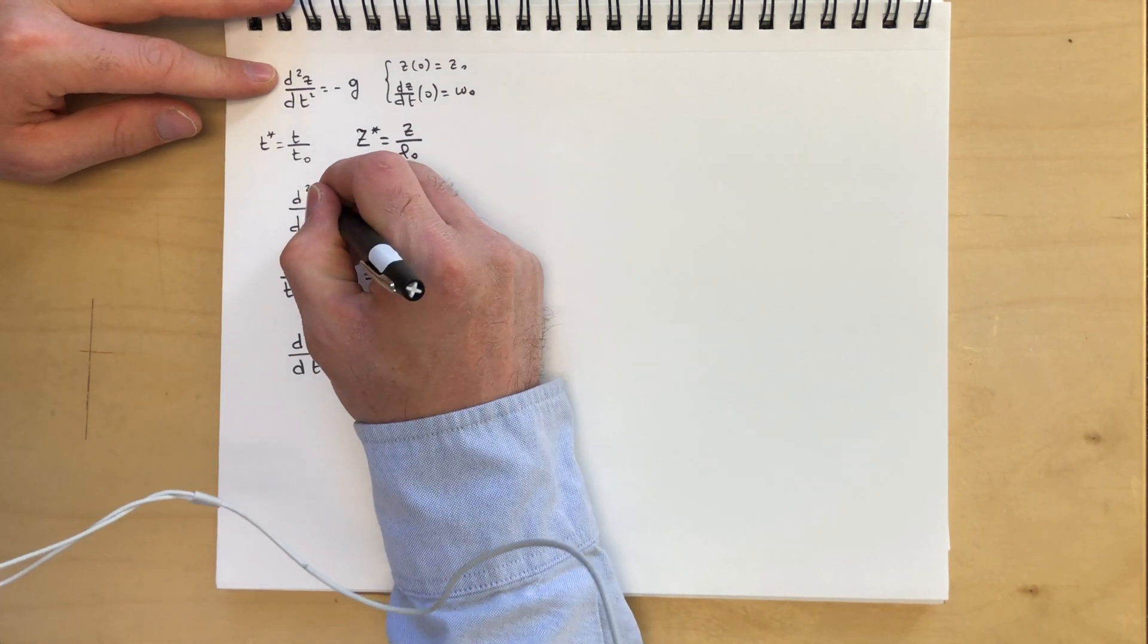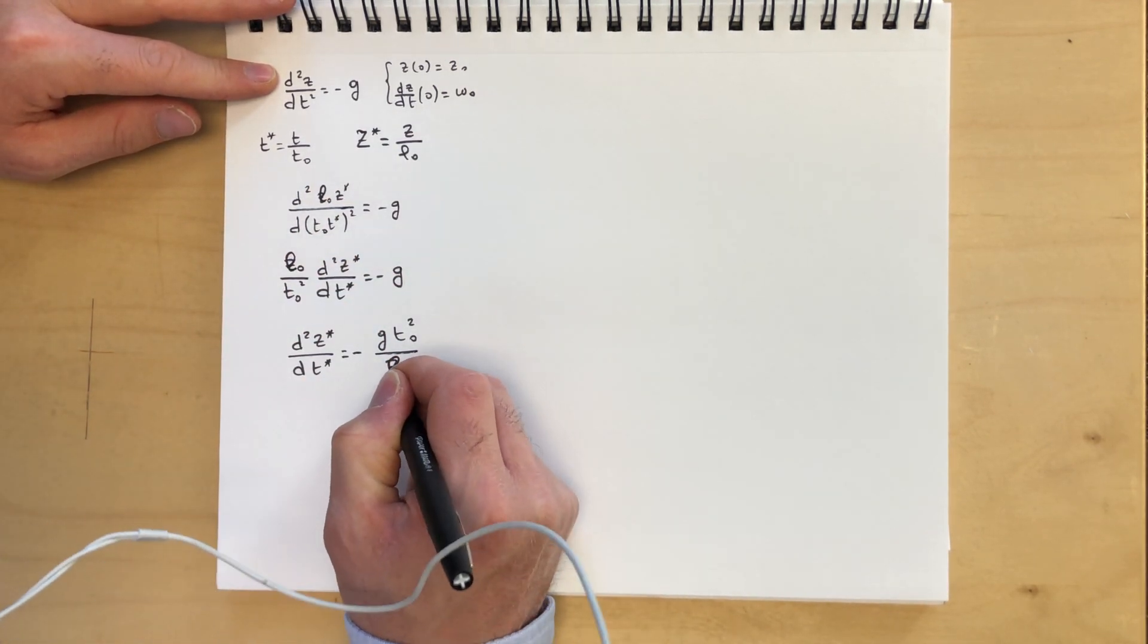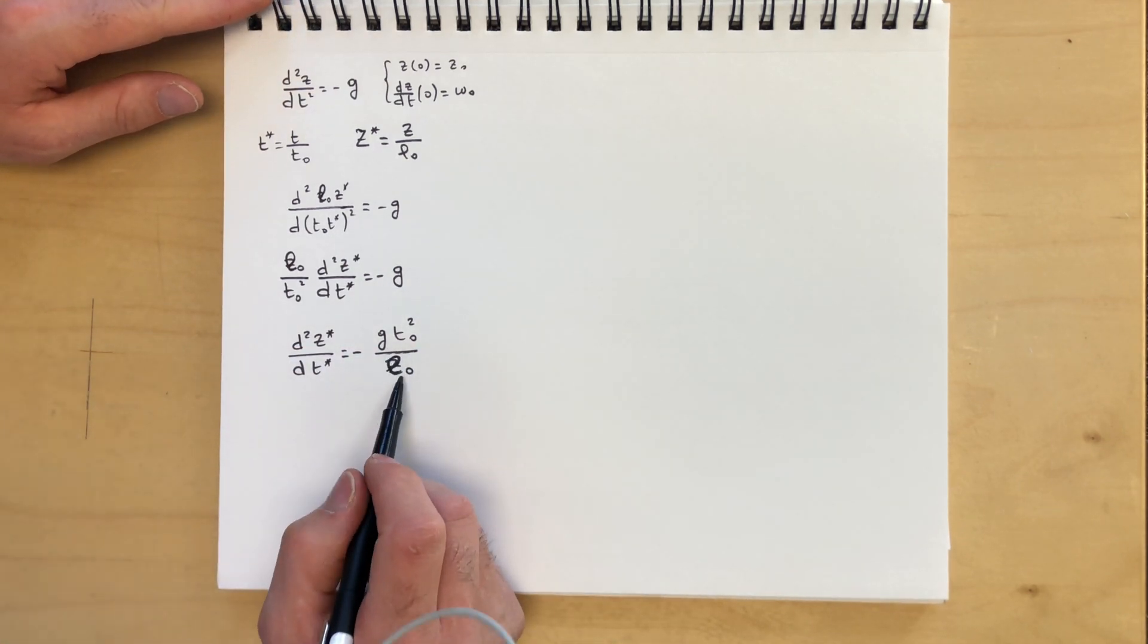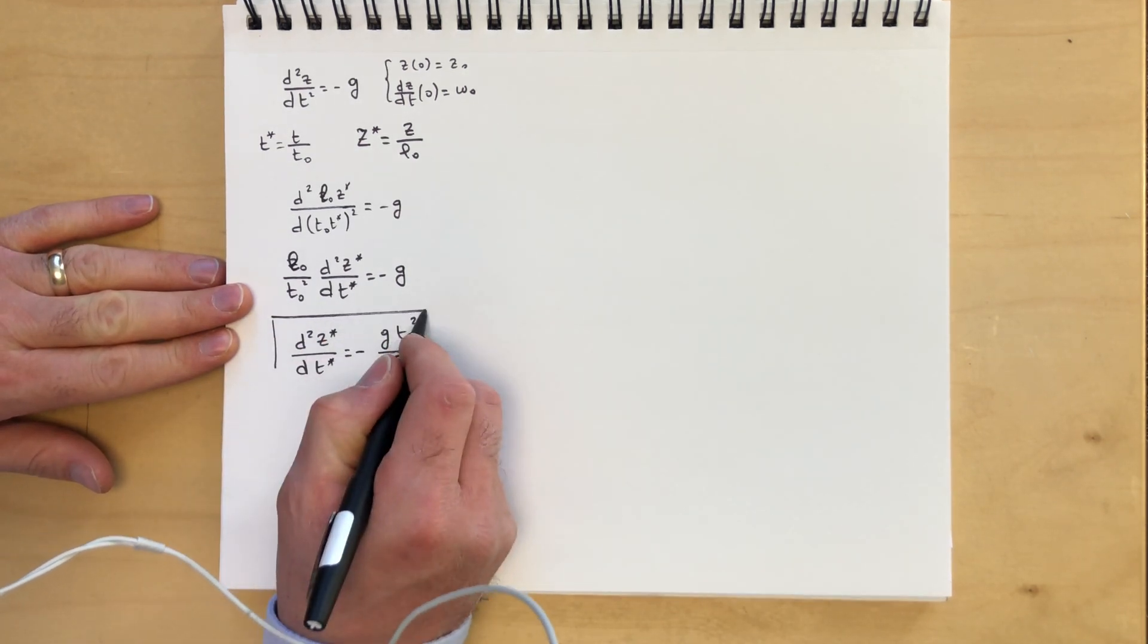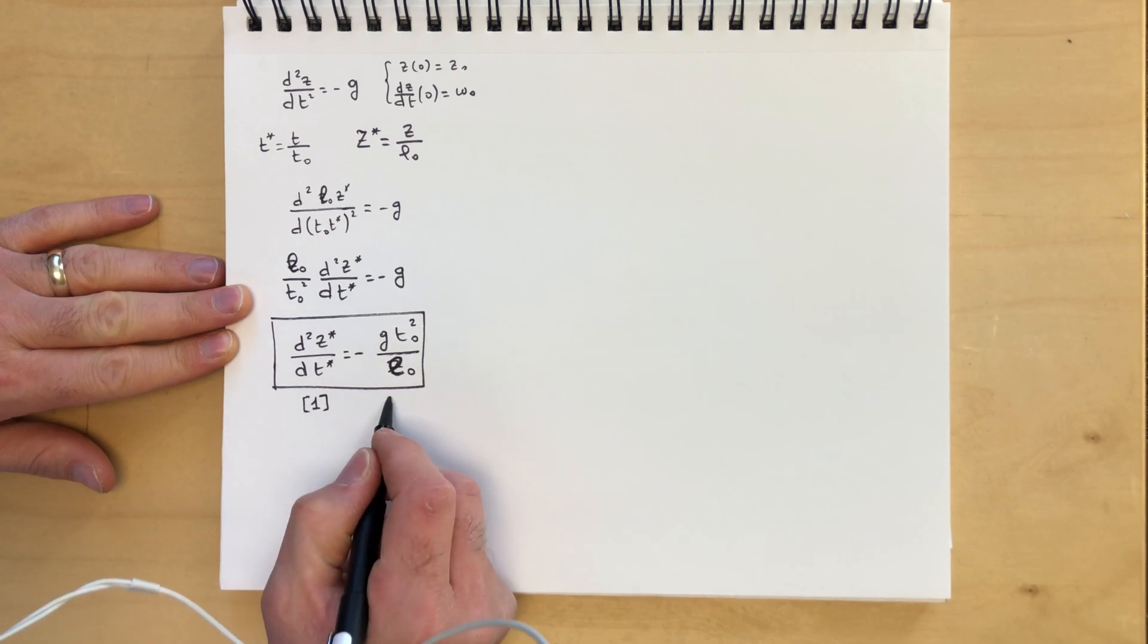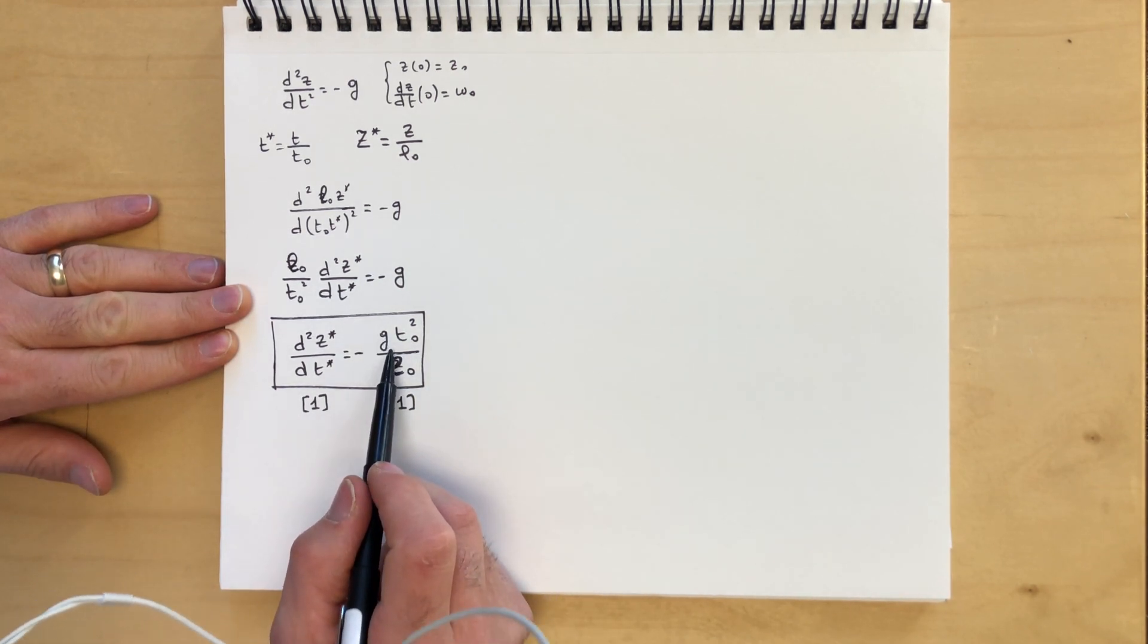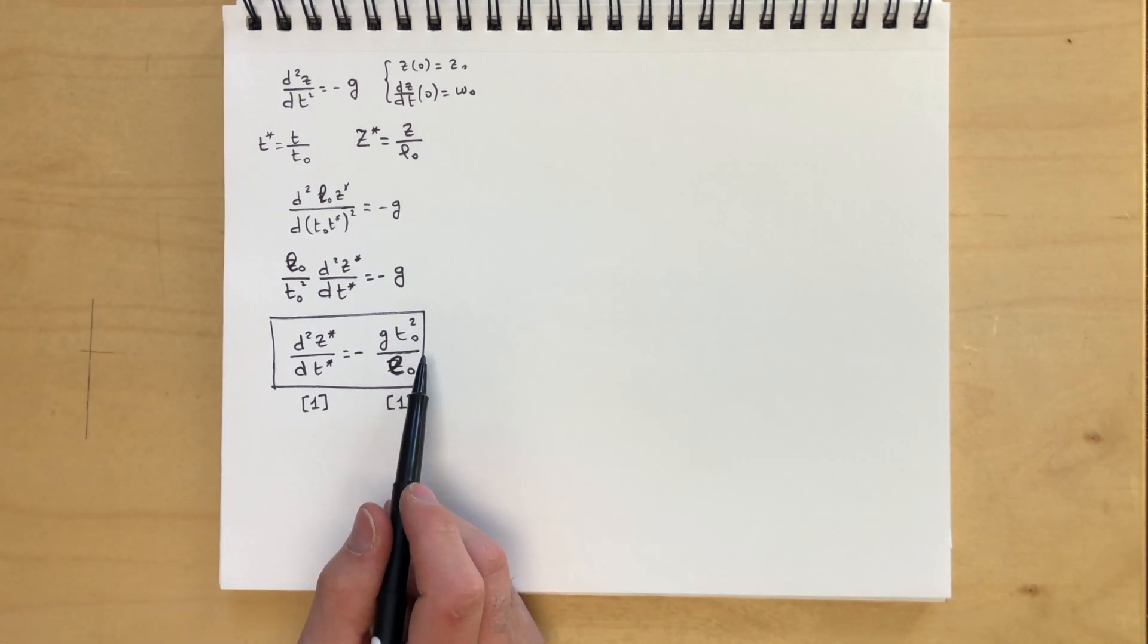Now, it doesn't take... Actually, this is L0. So I jumped the gun over here. This should be L0. We don't know what this... We haven't decided what this scale is. So you can easily show that this is actually a dimensionally homogenous, dimensionless equation. So the units for this one is 1, and the units for this term is 1. You can verify that. Meters per second squared times second squared over meter. I'll cancel out to give 1.